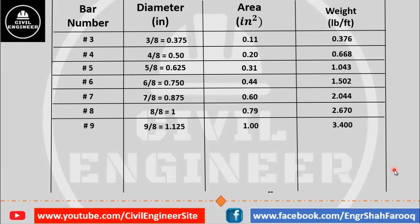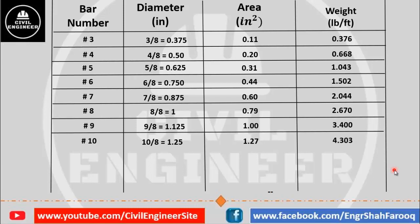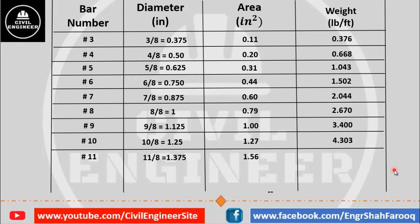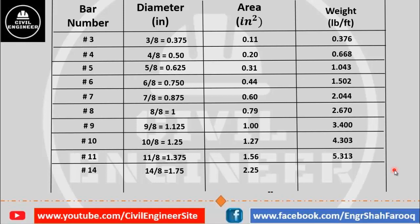The next bar available in markets is the number ten bar: its diameter is 10/8 inches, cross-sectional area is 1.27 square inches, and weight is 4.303 pounds per foot. The next bar is number eleven: diameter is 11/8 inches, cross-sectional area is 1.56 square inches, and weight is 5.313 pounds per foot.